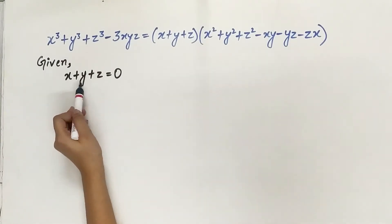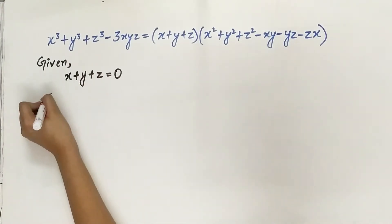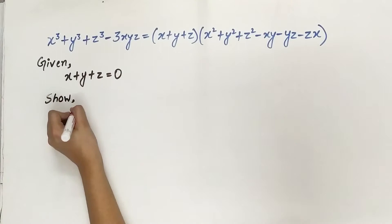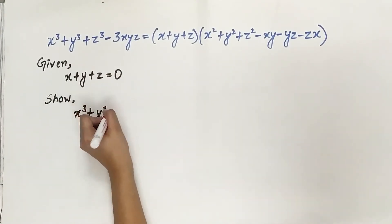Now our question says, if x plus y plus z is equal to 0, show x cubed plus y cubed plus z cubed is equal to 3xyz.